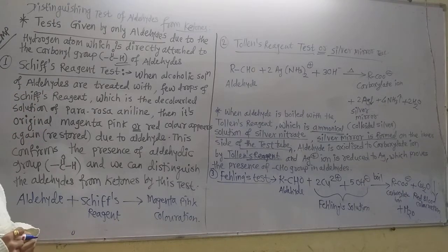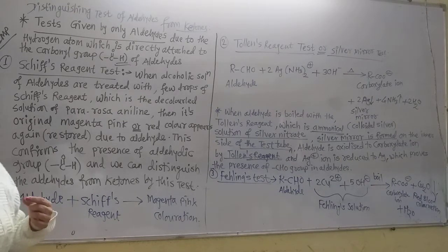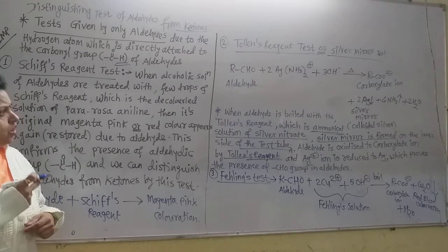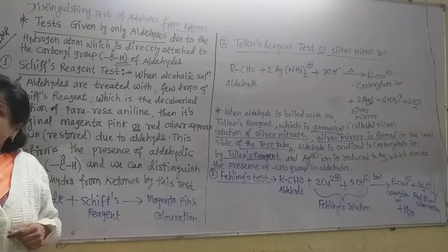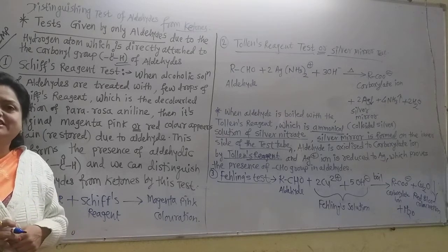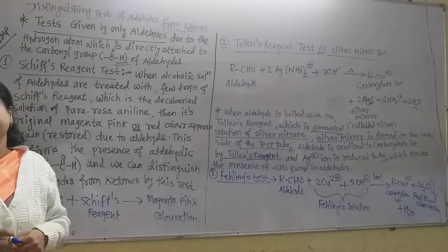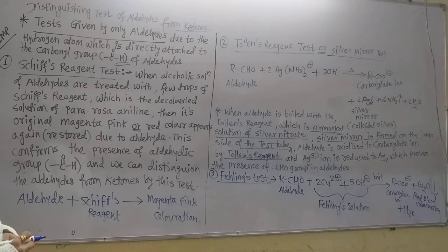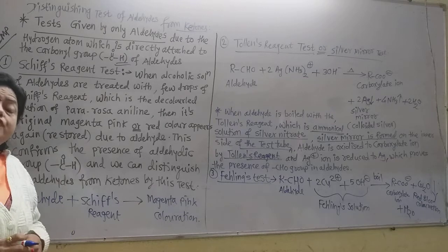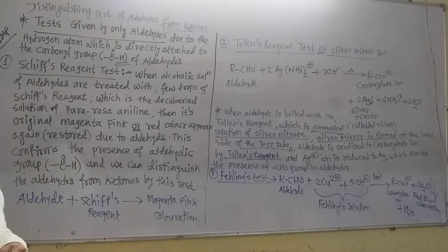The first test is among the distinguishing tests of aldehydes from ketones — how we can recognize whether a compound is an aldehyde or a ketone. If the test is positive for any of these three tests, then definitely the compound is an aldehyde. If the test is negative, the substance is not giving the test, then it may be a ketone or carboxylic acid. These are tests given by aldehydes only.